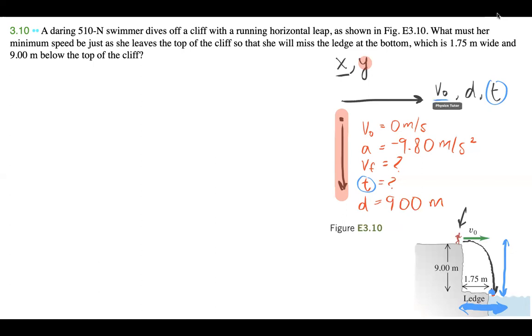We know that v-naught is equal to distance over time. I'm just going to go over why these two v-naughts are different.